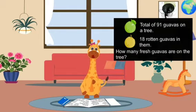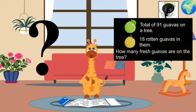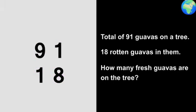Hmm, I don't know how to solve this. Can you help me? Let's see what is written in this riddle. There are a total of 91 guavas and 18 guavas have gone bad. 91 minus 18 is equal to what? Let's find the answer using subtraction.